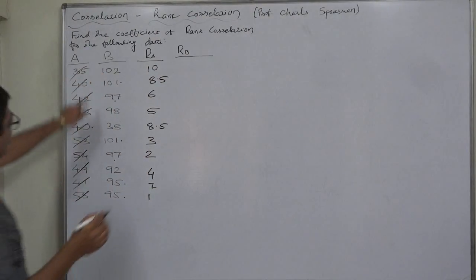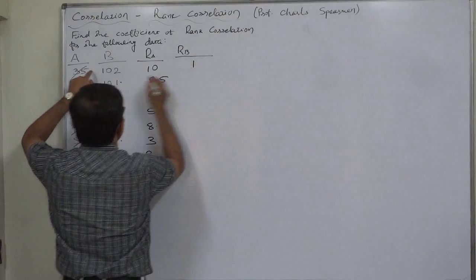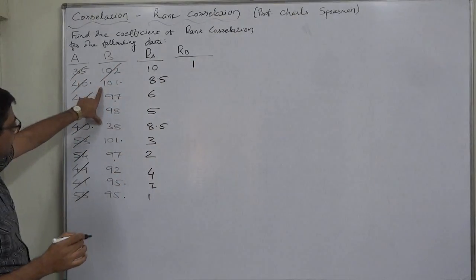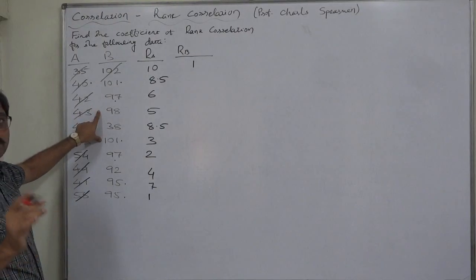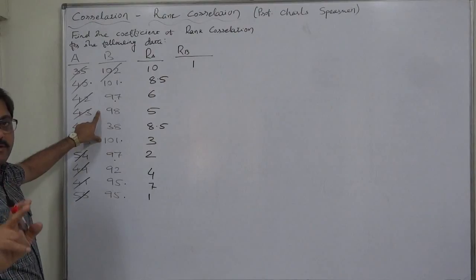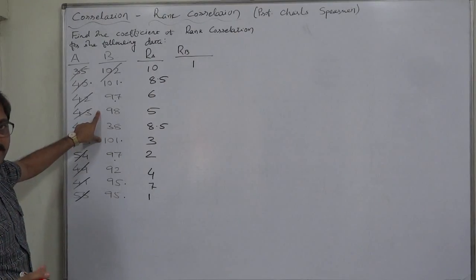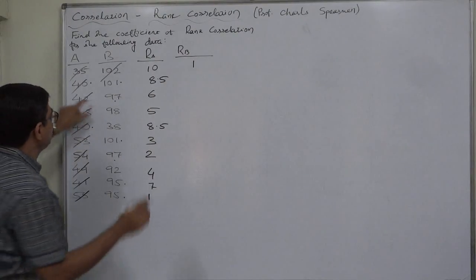Now, in case of B, 102 is the highest rank 1. 101 is the second highest value but it is 2 times. So we have to use 2 and 3 but we have to assign mean of 2 and 3 that will be 2 plus 3 divided by 2, 2.5.